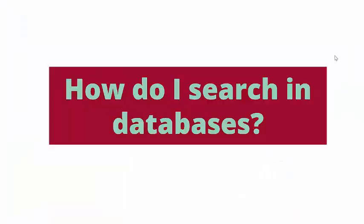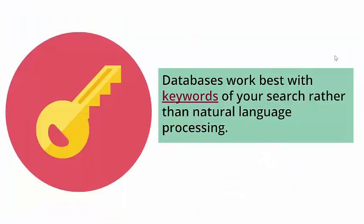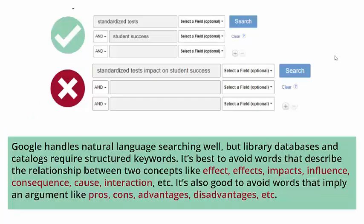How do I search in databases? Databases work best with keywords of your search rather than natural language processing. Google handles natural language searching well, but library databases and catalogs require structured keywords. It's best to avoid words that describe the relationship between two concepts like effect, effects, impacts, influence, consequence, cause, interaction, etc. It's also good to avoid words that imply an argument like pros, cons, advantages, disadvantages, and more.